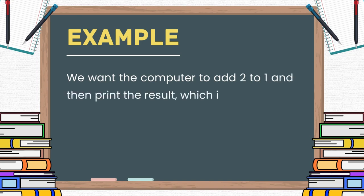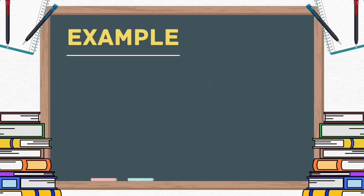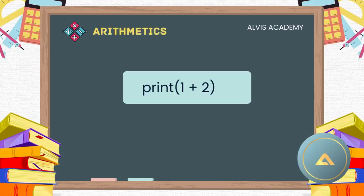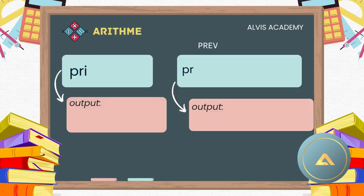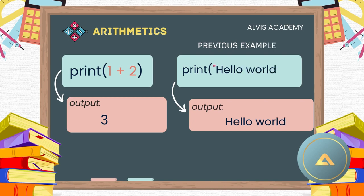Which is three. The code cell will look like this. Now take note of something. In our previous example we used hello world. In this example we use one plus two. Note that there is no quotation marks. We put quotation marks to indicate that what we want to print is a string, but here at this point we are printing